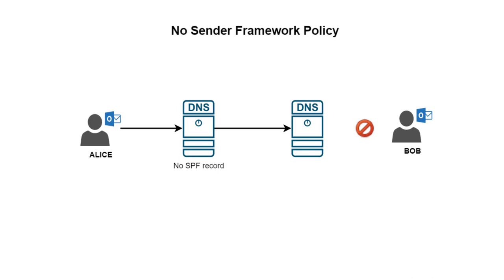The mechanism is about communication between the DNS servers — the sender and the receiver DNS servers. They will establish a communication and ask about the SPF records. So let's say in this example that Alice is sending an email to Bob.